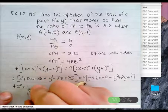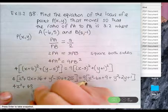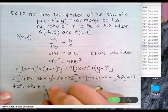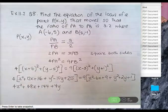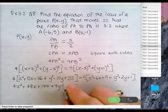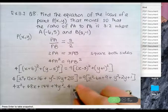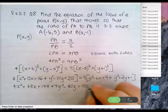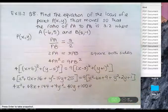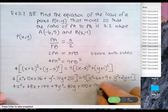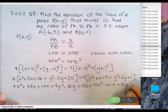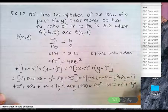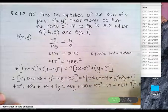Expanding: 4(x squared plus 12x... and 4y squared minus 40y plus 100) equals 9(x squared minus 6x plus 9 plus y squared plus 2y plus 1). Multiply the left-hand side by 4, right-hand side by 9. We get 4x squared plus 48x plus 144 plus 4y squared minus 40y plus 100 equals 9x squared minus 54x plus 81 plus 9y squared plus 18y plus 9.